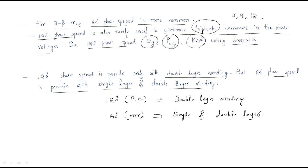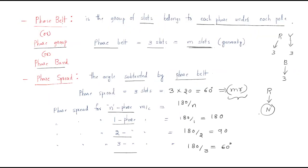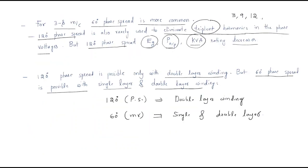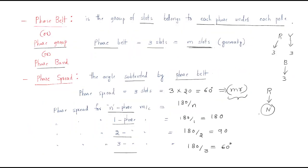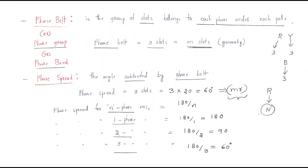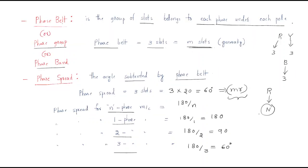This is about distributed winding and some terms regarding distributed winding — phase belt and phase spread. I hope all of you understand. Thank you.